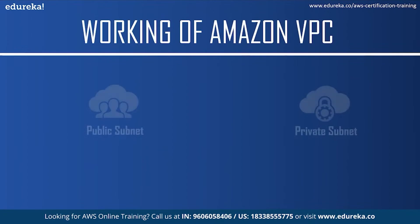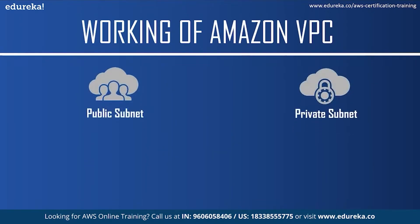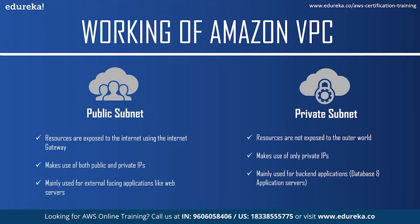Now let us see the difference between public and private subnets. In a public subnet, resources are exposed to the internet using the internet gateway. They make use of both public and private IPs and are mainly used for external-facing applications like web servers, where you want the information to be visible to users. In a private subnet, resources are not exposed to the outer world and use only private IPs. They are mainly used for back-end applications like databases and application servers.